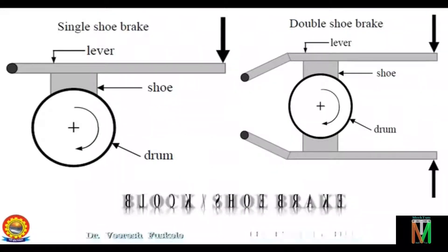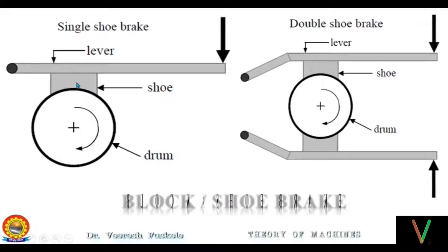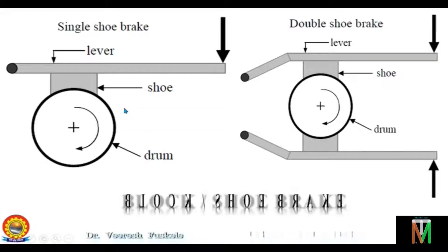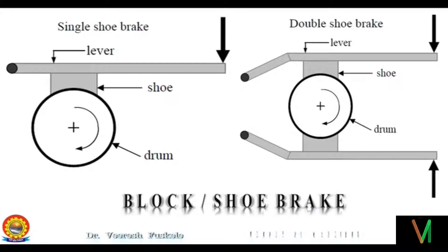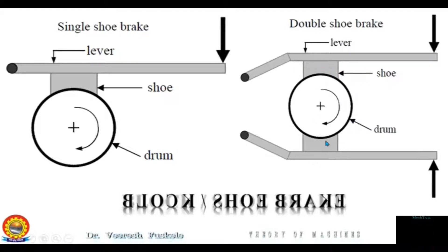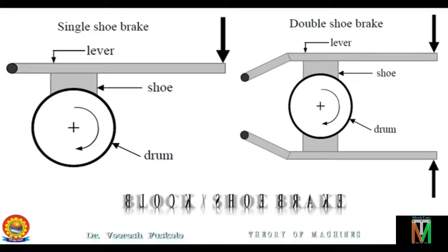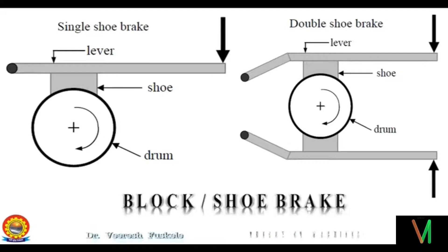A block or shoe brake consists of a block or shoe which is pressed against the rotating drum. The force on the drum is increased by using the lever. If only one block is used, a side thrust on the bearing of the shaft supporting the drum will act. This will be prevented by using two blocks on the two sides of the drum, which also doubles the braking torque. A softer material than that of the drum or the rim of the wheel is used to make the blocks, so that these can be replaced easily on wearing.